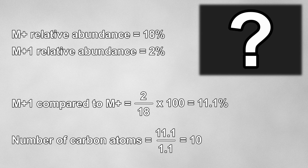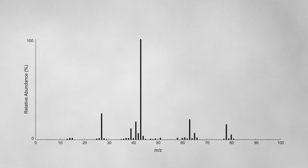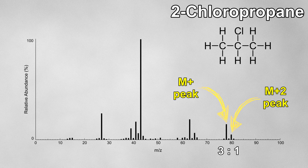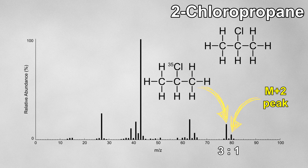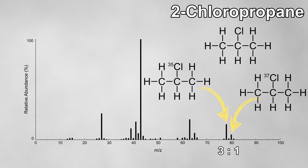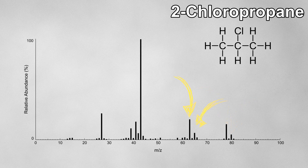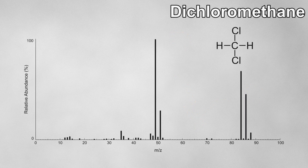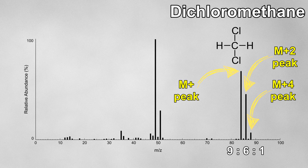There are other useful ratios to look out for to help identify elements in a molecule. Looking at a mass spectrum with an M+ peak at 78 and an M+2 peak at 80 in a 3 to 1 ratio — this indicates the presence of a chlorine atom. The molecule here is 2-chloropropane: the peak at 78 is due to chlorine-35 and the peak at 80 is due to chlorine-37. There are also similar peaks at 63 and 65 for the same fragment ion where a methyl group has been removed, again in the same ratio. If there were two chlorine atoms in the molecule, we'd also get an M+4 peak, with these three peaks in a 9 to 6 to 1 ratio due to the possible combinations of the chlorine isotopes.